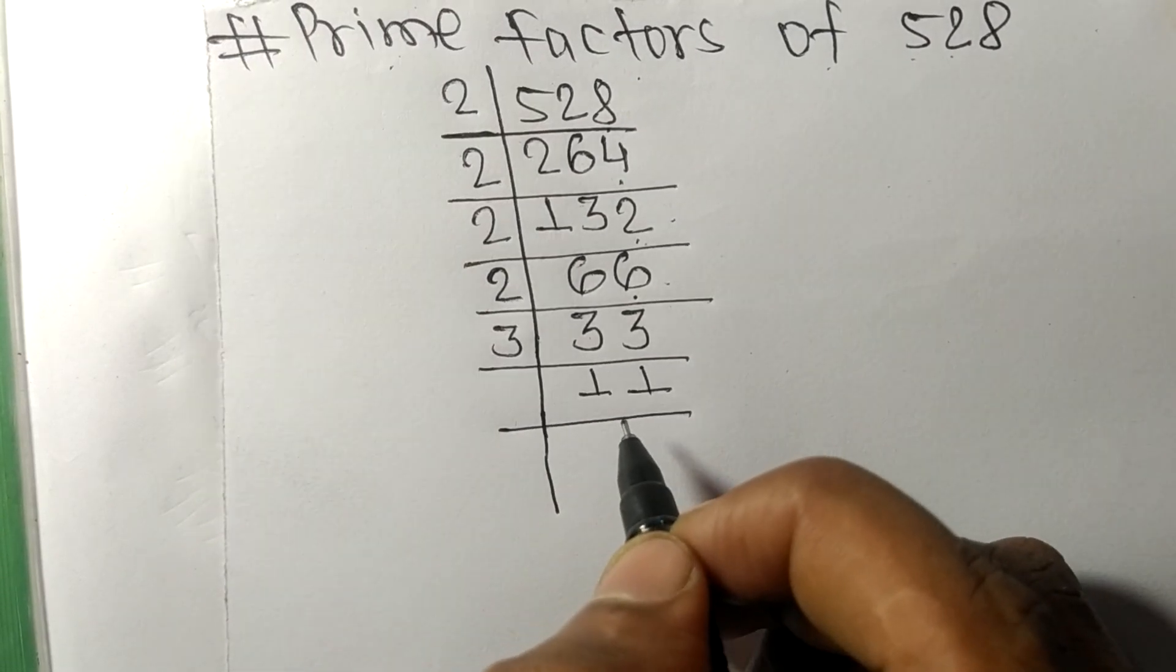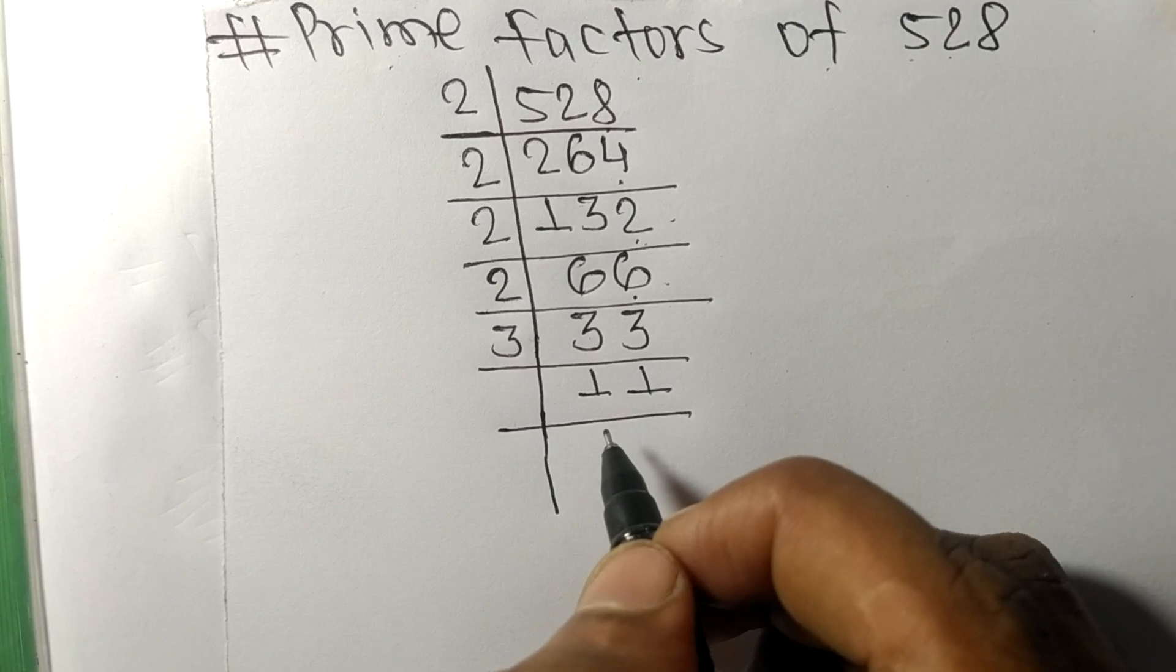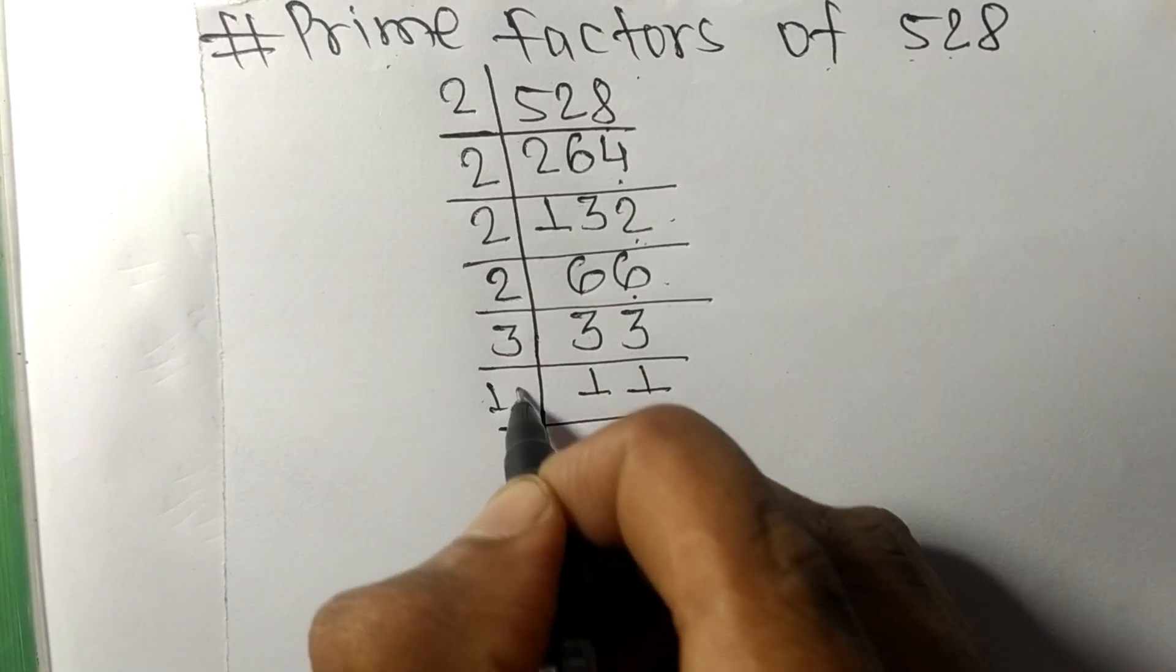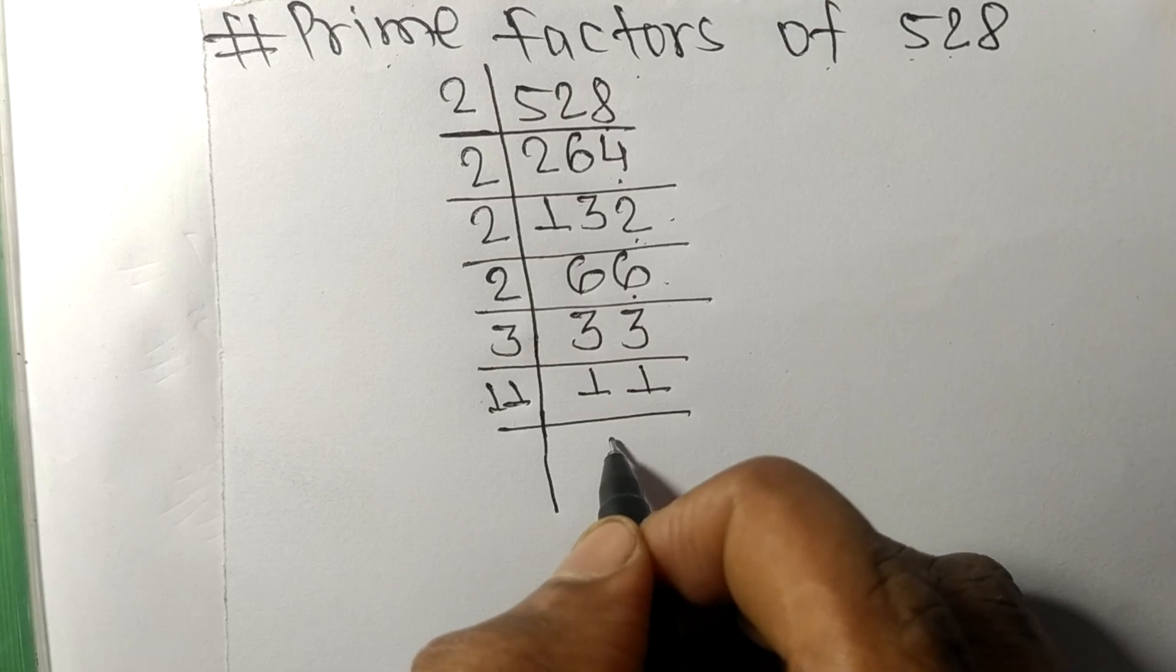11 is divisible by 11 itself, and we get 1.